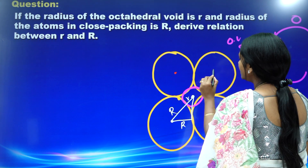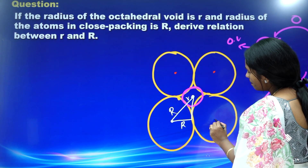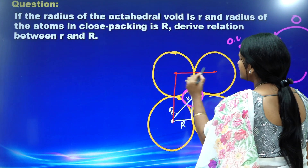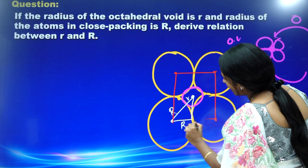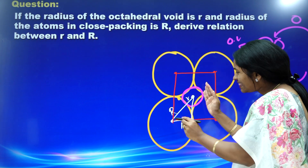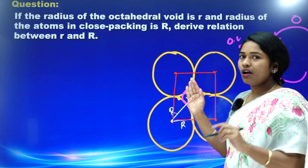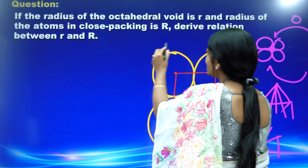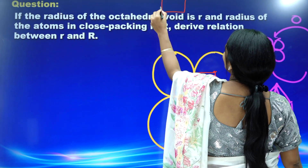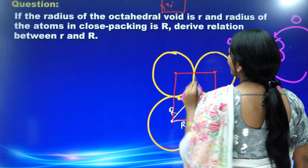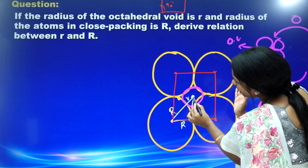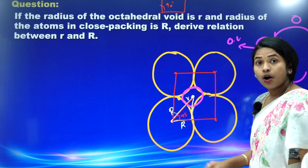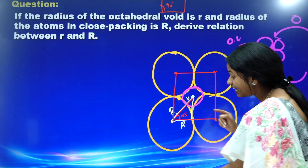Make one center here, one center here, one center here — join these four centers. You will get one square, and in that square, what is the angle? 90 degrees — a perfect square. Then you are taking exactly half of this, so it will be 45 degrees. This angle here is 45 degrees.